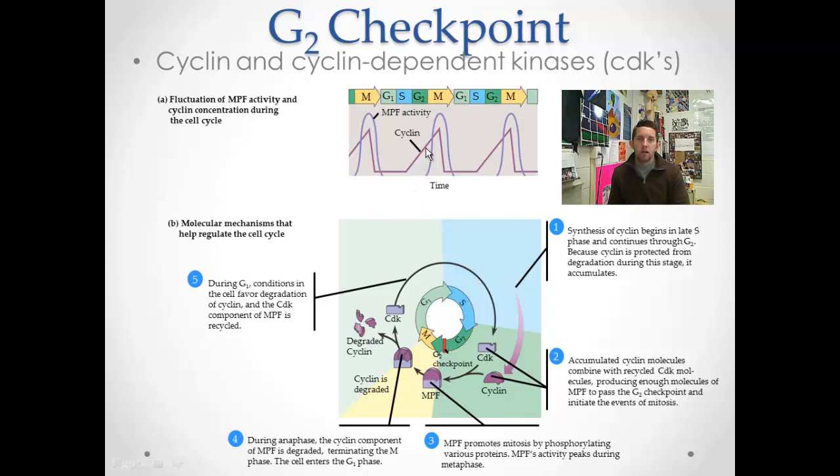So cyclin's increasing. And look, this other looping line, this is MPF activity. So watch what happens. As cyclin increases, more of it's going to associate with CDK. More MPF is produced, so MPF activity rises.